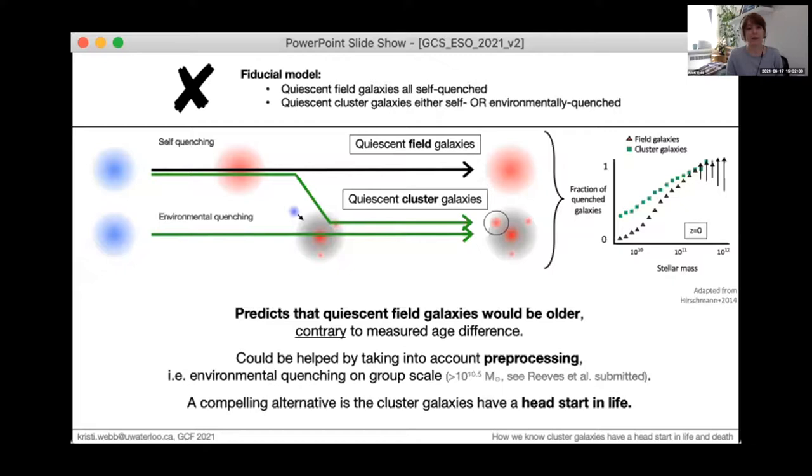Now this is a simple model and importantly it neglects the fact that environmental quenching can occur in group-sized halos, not just cluster size halos, and including pre-processing can help make this model fit with the measured age difference. Once again I'll plug a paper just submitted by my colleague Andrew Reeds on the halo mass dependence of the quenched fraction with GoGreen, which shows that this could be really important above masses of 10 to the 10.5.